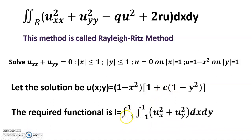I equals integral from -1 to 1, integral from -1 to 1 of (u²x + u²y) dx dy.